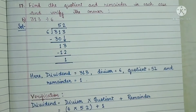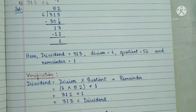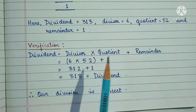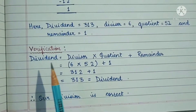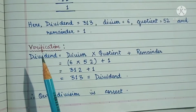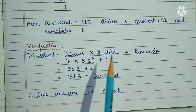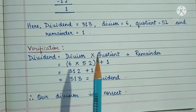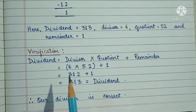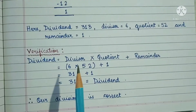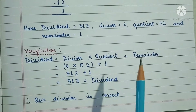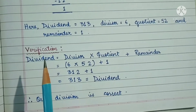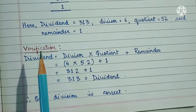Now comes the verification part. For verification we use the relation: Dividend = Divisor × Quotient + Remainder. This relation brings dividend, divisor, quotient, and remainder all together. In simple language, when we multiply the divisor by the quotient and then add the remainder, we must get the dividend. This shows that our division is correct.